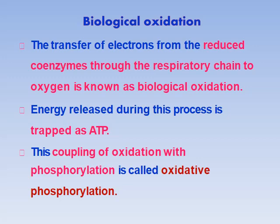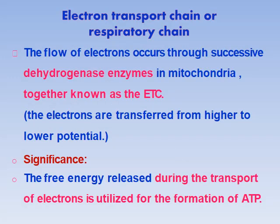Since biological oxidation and oxidative phosphorylation are a coupling process working simultaneously, it is essential to know where this process takes place and where the electron transport chain, enzymes, and coenzymes are located. The location of the electron transport chain is in the mitochondria — more precisely, in the inner membrane of the mitochondria. Mitochondria have specialized folded structures called cristae, which increase the surface area and make ATP synthesis much more efficient.